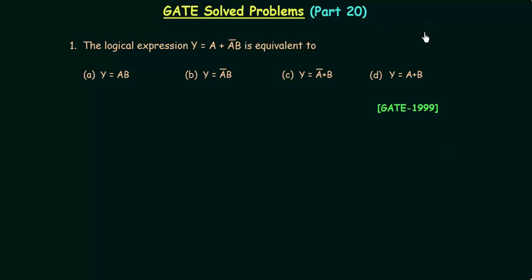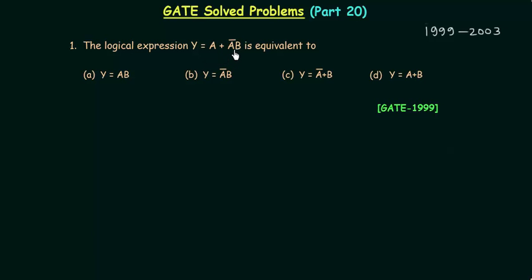In this part we will solve Boolean algebra problems from the GATE 1999 and GATE 2003 exams. In the first problem, the logical expression Y is equal to A or (A complement and B).